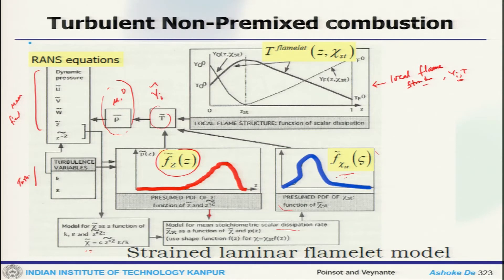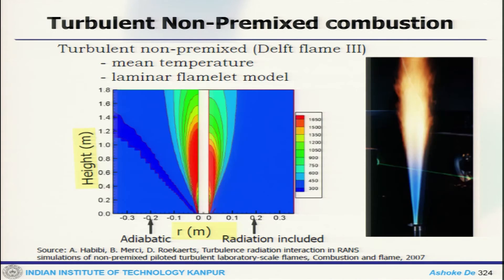That is how the mixture fraction based approach actually works. Looking at some examples taken from the literature — this is a natural gas flame — here is the mean temperature profile and the laminar flamelet model predictions, showing how predictions are obtained along with the flame structure.